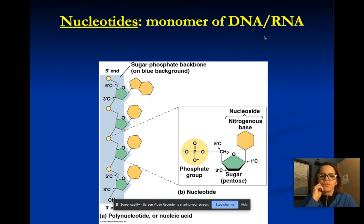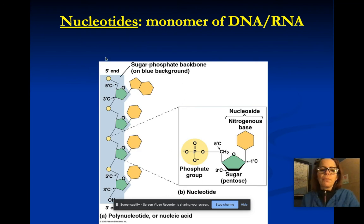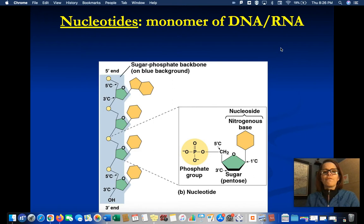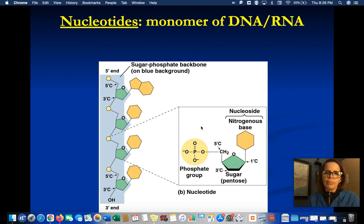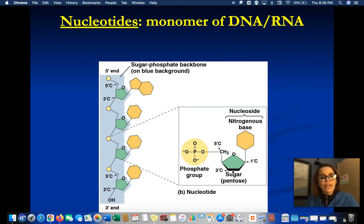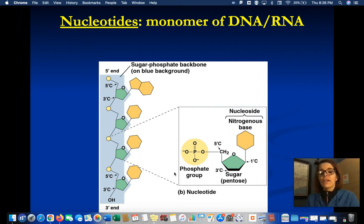The reason I wanted to review this is there's always lots of student frustration over the phrases '5 prime end' and '3 prime end.' The 5 prime end refers to which carbon the phosphate is attached to. So let me refresh your memory. This is a molecule — it could be RNA. The monomers are the building blocks of DNA or RNA and they're called nucleotides. A nucleotide is a phosphate, one of the five-sided sugars, and one of the nitrogen bases.